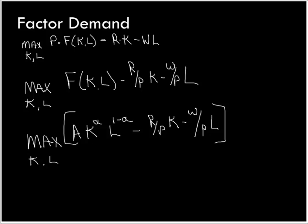We take the derivative and set it equal to zero. We normally worry about both first-order conditions (first derivatives) and second-order conditions (second derivatives). For now, we're going to ignore the second-order conditions. For all Cobb-Douglas production functions with constant returns to scale, the second-order conditions are satisfied — they correspond to the marginal products of capital and labor being diminishing. So we focus just on the first-order conditions.